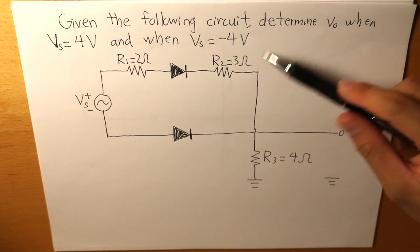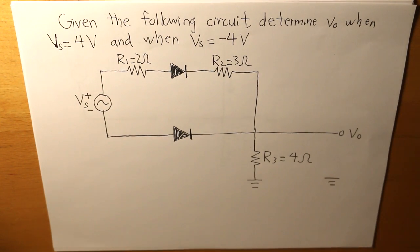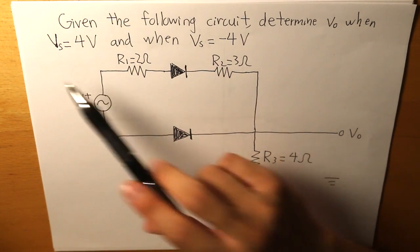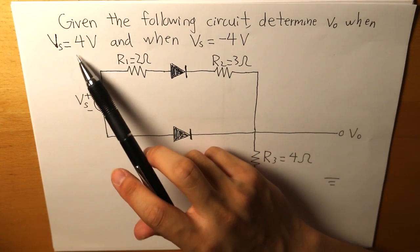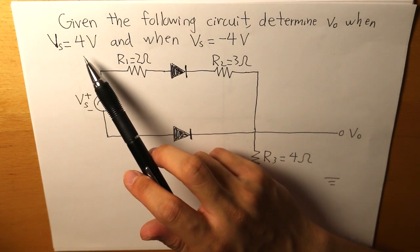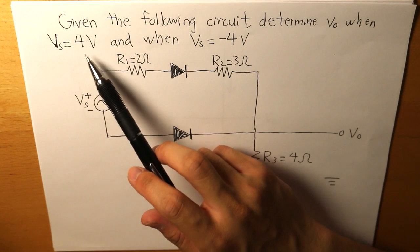R2 is 3 ohms and R1 is 2 ohms. So we have to calculate what the output voltage is given these two respective situations. So let's start off with when it is in positive 4 volts.